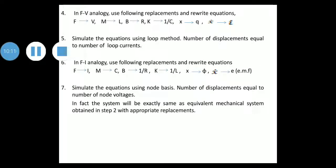Step 4: In FV analogy, use the following replacements and rewrite the equation: F → V, M → L, B → R, K → 1/C, X → Q, Ẋ → I. Step 5: Simulate the equations using loop method. Number of displacements equals number of loop currents.